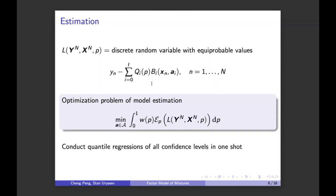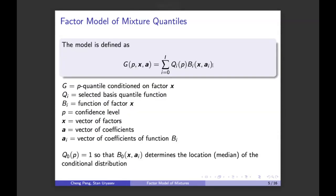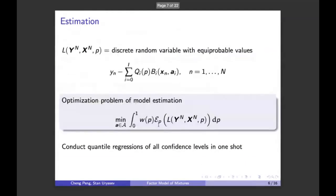Just formulating this model doesn't achieve the goal stated at the beginning. We need some specifications for Q sub i and p sub i to make sure, for example, that it's a valid quantile model — non-decreasing and without quantile crossing as a function of p. For parameter estimation, we also need to specify the family of Q sub i and p sub i to make sure this is a convex optimization problem.